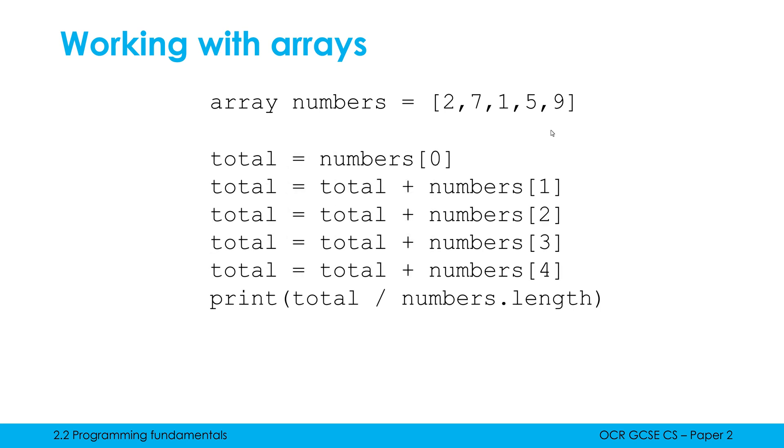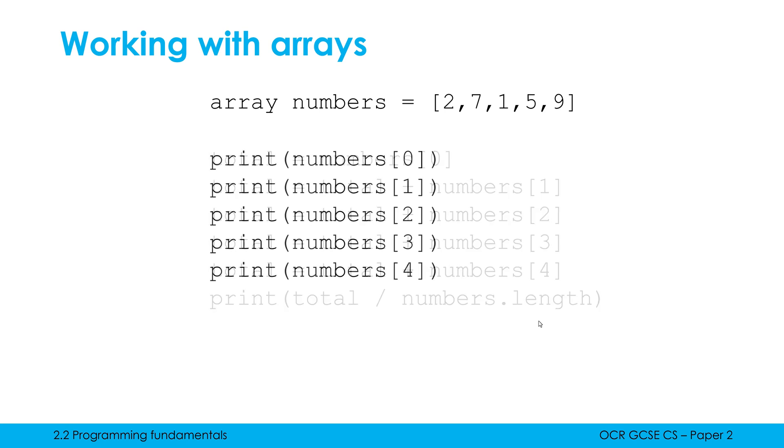To give another example, I might want to find the mean average from this array of numbers. I could do this just by indexing and by adding each item to a total and dividing by the length of this array. .length works on both arrays and strings. But this method, not very clever.